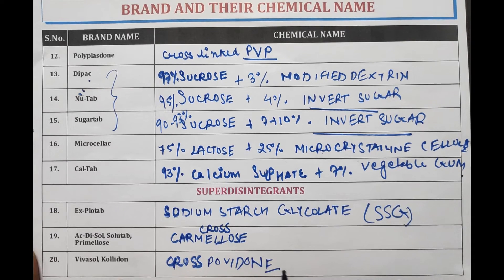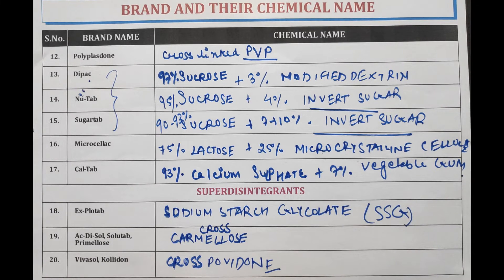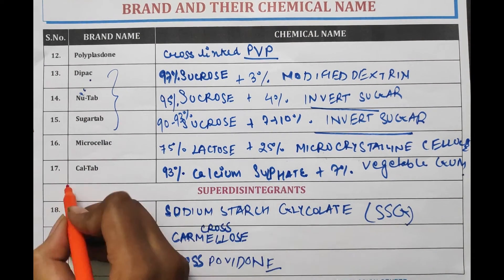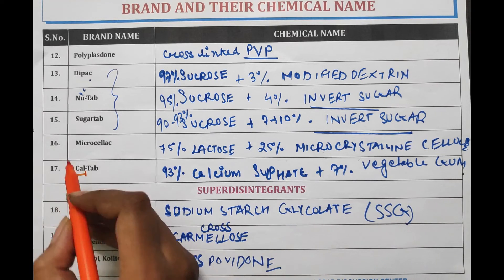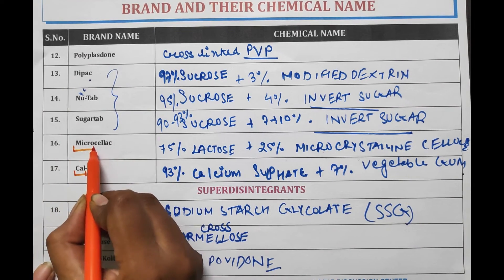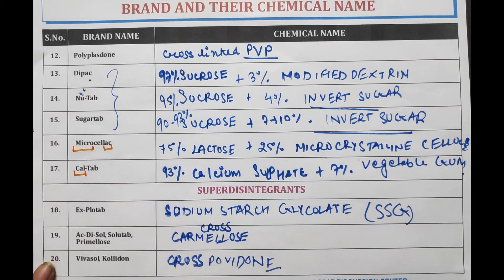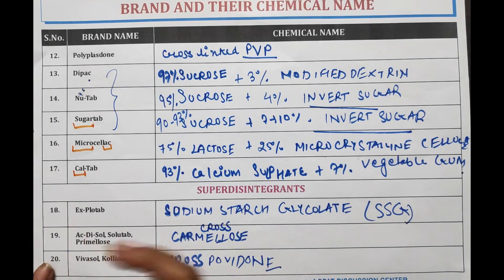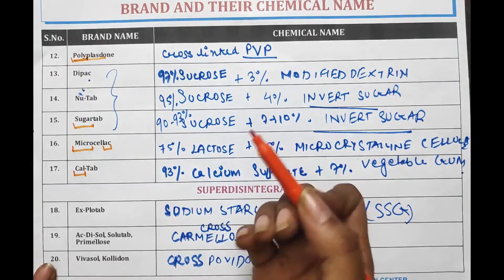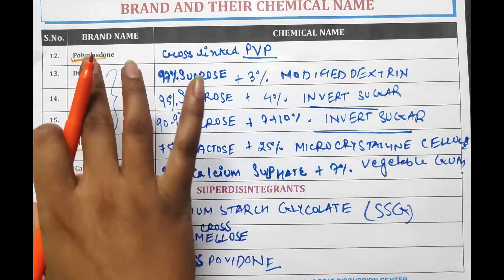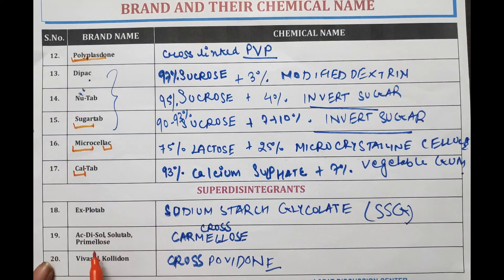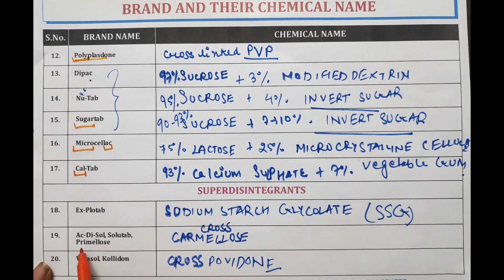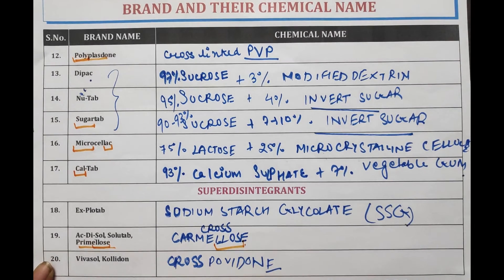There is a small trick to remember brand names: Caltab — 'cal' means calcium. Microsilac — 'micro' means microcrystalline cellulose, and 'lac' means lactose. Sugartab — 'sugar' means sucrose. Polyplastone — 'poly' refers to a polymer, specifically cross-linked povidone. Primolose — 'lose' refers to carmellose. Vivasolcolidone means cross-povidone.